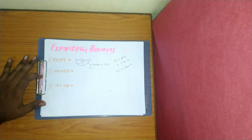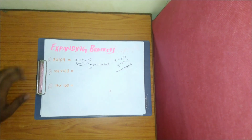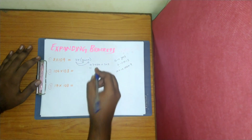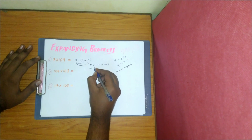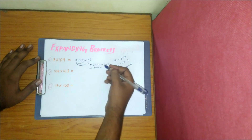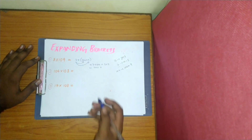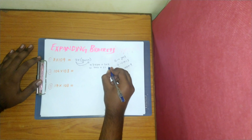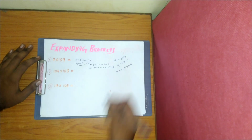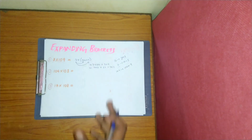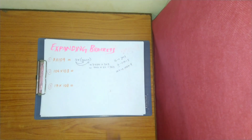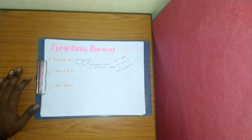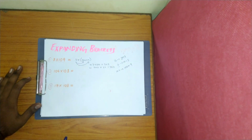So basically: 7 into 100 is 700, plus 7 nines are 63, so the answer will be 763. It's a little bit easier to calculate, right? So let us go to the second question.